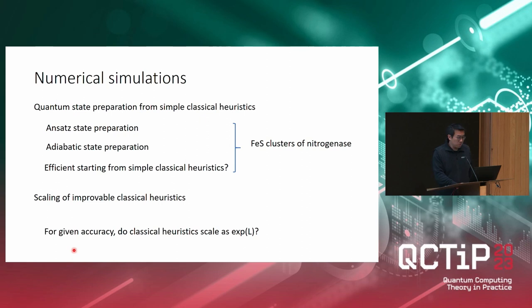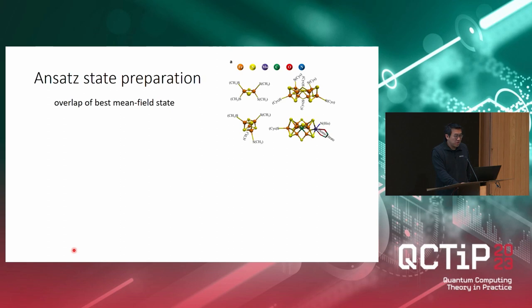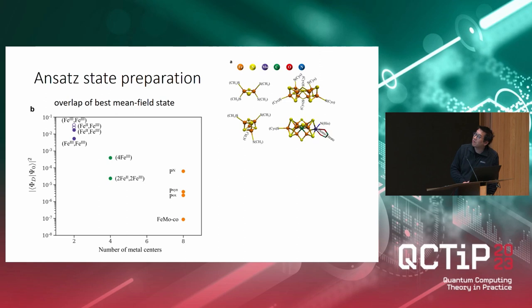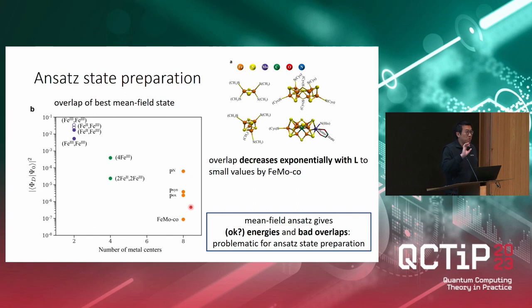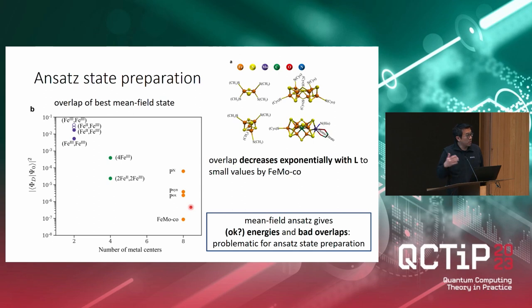I'll go very quickly through some data — first some data about state preparation, then some data about classical heuristics. For ANSATZ state preparation, we studied a class of systems — iron-sulfur clusters — and looked at whether a simple heuristic like starting from a mean-field state yields a good overlap with the ground state. You obtain graphs showing the overlap versus the system size on a log-linear plot with a linear dependence. Perhaps unsurprisingly to many people but surprising to some, the overlap decreases exponentially with system size to very small values. This suggests that the hope that the simple one-shot heuristic yields a very good overlap across all system sizes is obviously too optimistic. One needs to consider improved classical heuristics and then check whether they solve the problem.